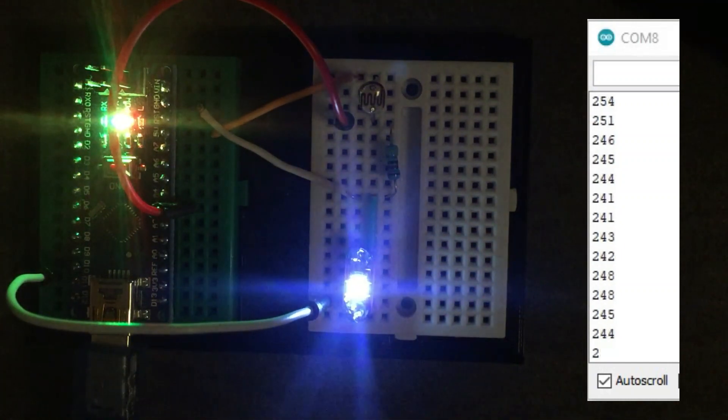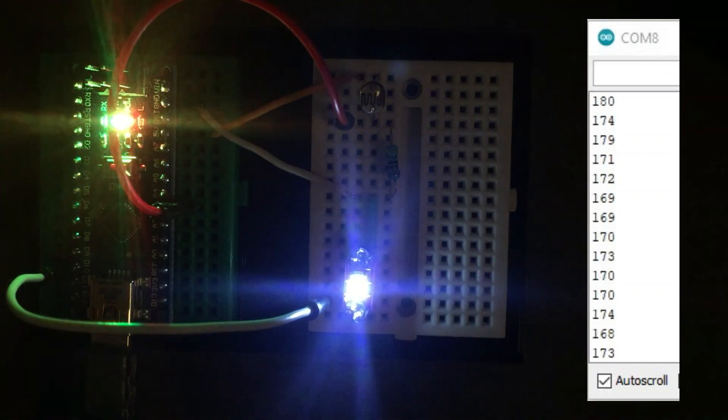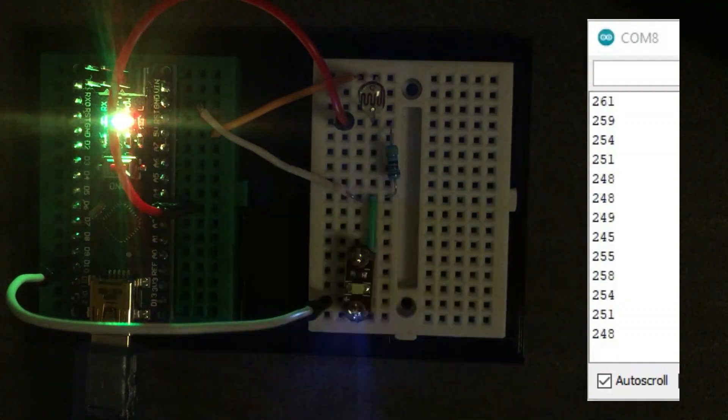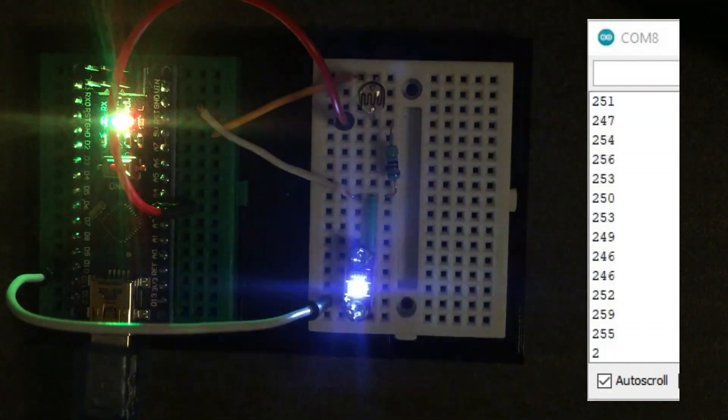If we are close to the threshold, the LED flickers as the readings fluctuate, being in turn above and below the threshold value. If we go decisively below 250, the flickering stops and the LED is fully on.